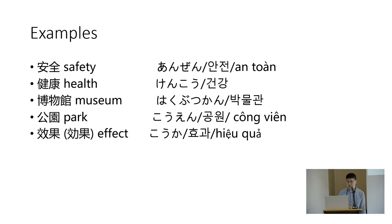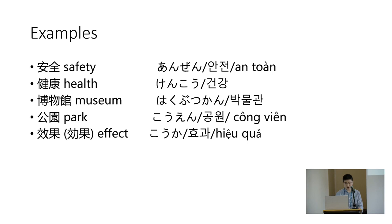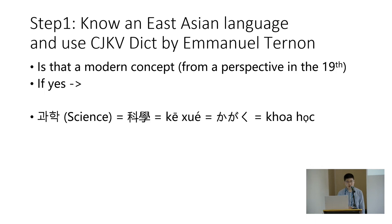Some examples you might not think are modern, but actually are modern for East Asia: 'safety' — anzen/anquan; 'health' — even health is a modern concept — kenkō/jiànkāng; 'museum' — hakubutsukan/pamulgwan; 'park' — kōen/gōngyuán; and 'effect' — kōka/xiàoguǒ. Pretty much almost everything you encounter nowadays comes from this era.